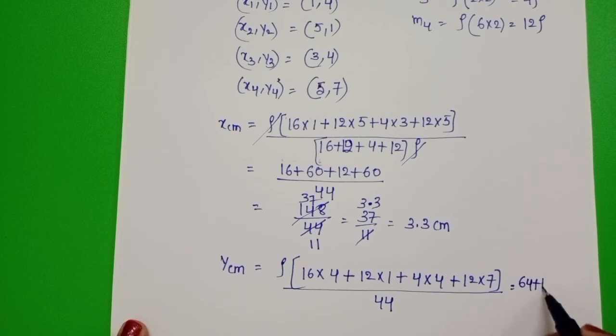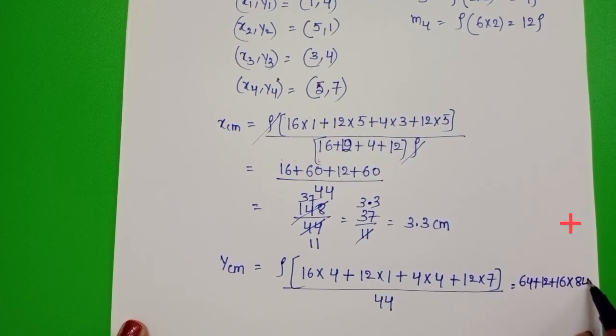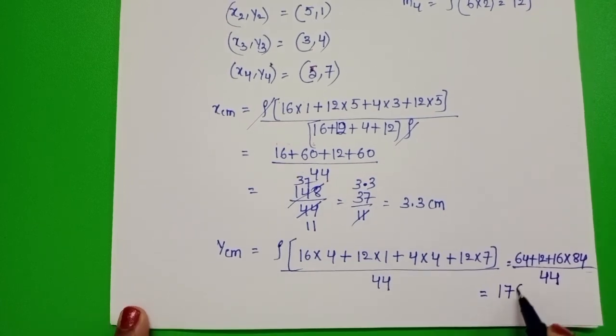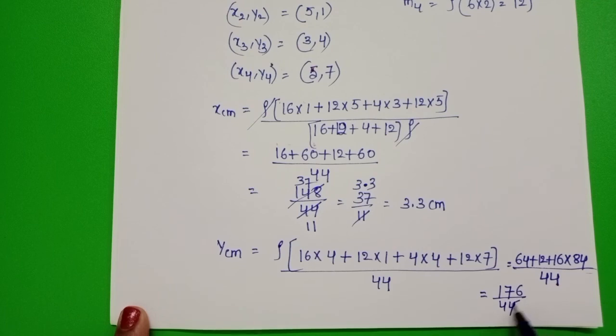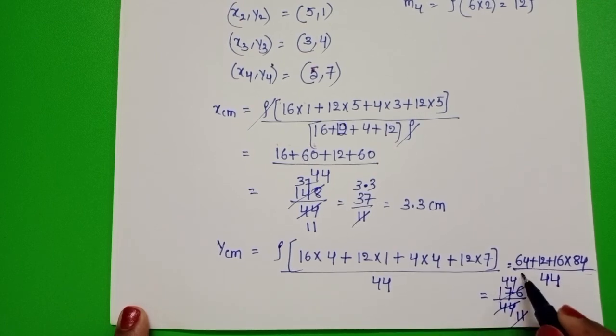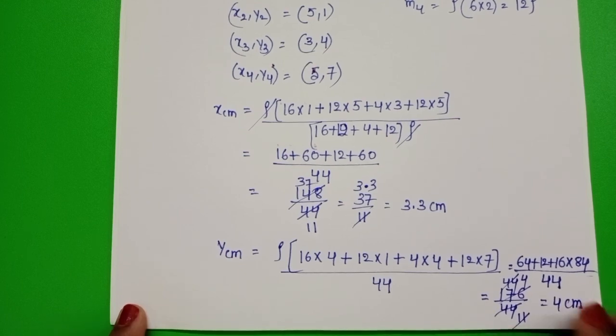64 plus 12 plus 16 plus 84 by 44, which is 176 by 44. Dividing gives 4 cm.